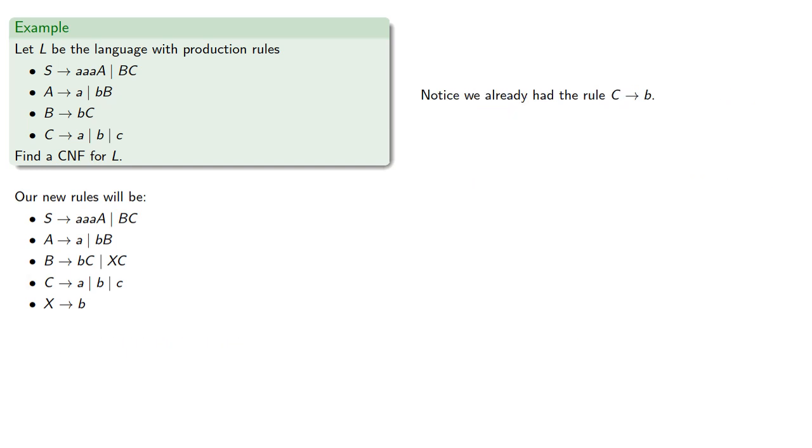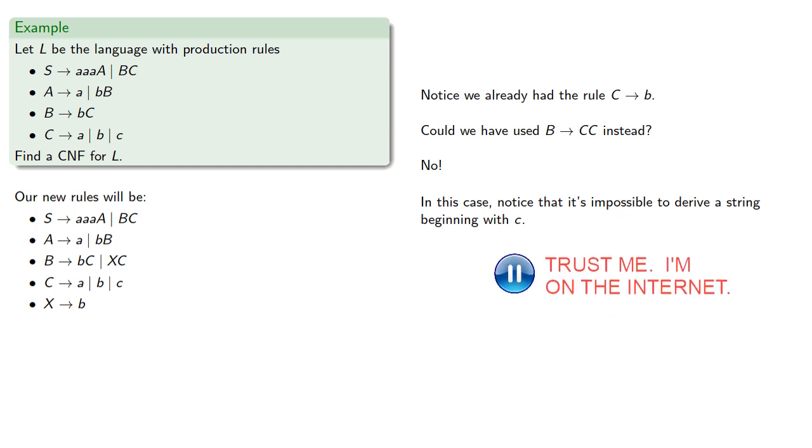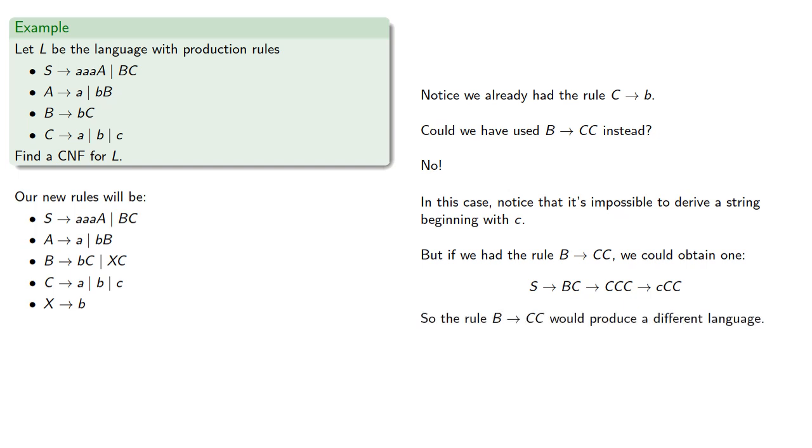Now, you might notice we already had the rule C produces b. So did we really need to introduce this new variable X? Could we have used B produce CC instead? And the answer is no. In this case, notice that it's impossible to derive a string beginning with C. But if we had the rule B produces CC, we could obtain one. And so the rule B produces CC would actually produce a different language. And in general, if there's more than one possible production from a variable, reusing it may introduce additional strings not in the original language.